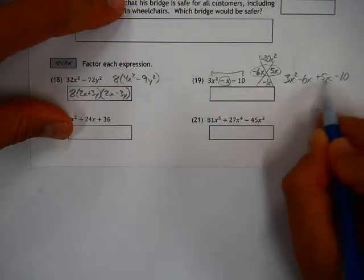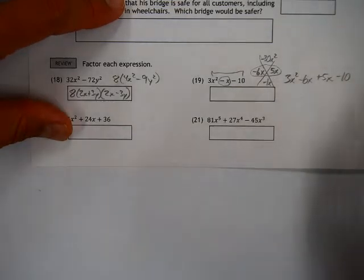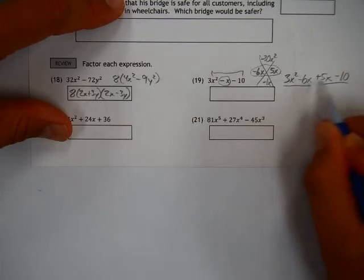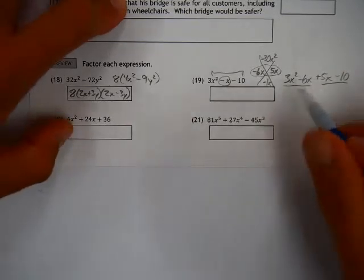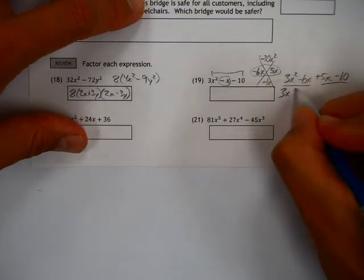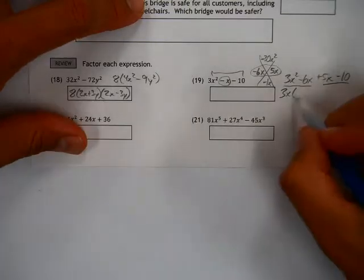Now, by the way, if you moved these back, if you switched them, you'd still get the same answer. If you put a 5x here and a negative 6x there, trust me. Or if you don't trust me, fine, be that way. But you can switch those. See what I'm going to do here. Do your own and see that they come out the same. Again, you take out the 3x. The curious will do that. It's good to be curious, by the way.